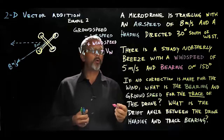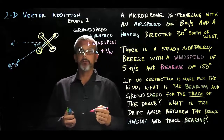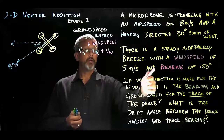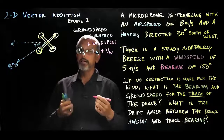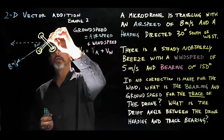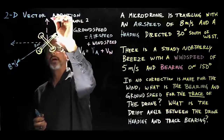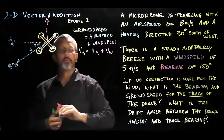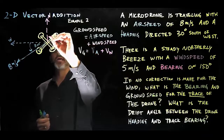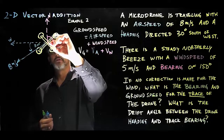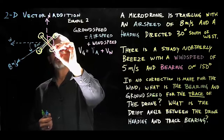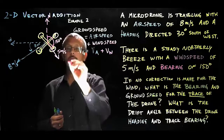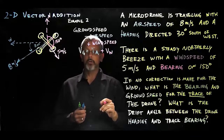We estimate something about 30 degrees south of west with a magnitude of 8 meters per second. Continuing, there is a steady northerly breeze — northerly means coming out of the north — with a wind speed of 5 meters per second and a bearing of 150 degrees. Bearing is measured from a northerly direction going clockwise, so we draw that clockwise 150-degree bearing at 5 meters per second.